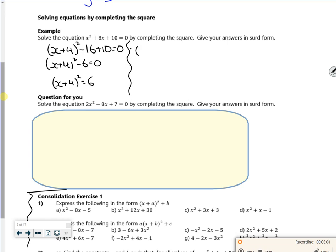Square root both sides, x plus 4 is plus or minus root 6. And then get rid of the plus 4. There you go. I've got x equals minus 4 plus or minus root 6. And it looks like something I get out of the quadratic formula.